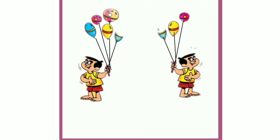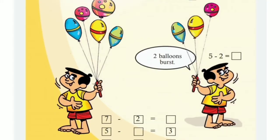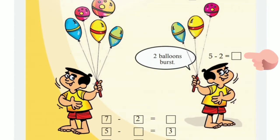How many balloons were there at first? Yes, 5 balloons. How many burst? 2 balloons. So 5 minus 2 is equal to 3. Then all of you come back to our page and look at the question: 5 minus 2 is equal to how many? 5 minus 2 is equal to 3. You have to write the answer here.